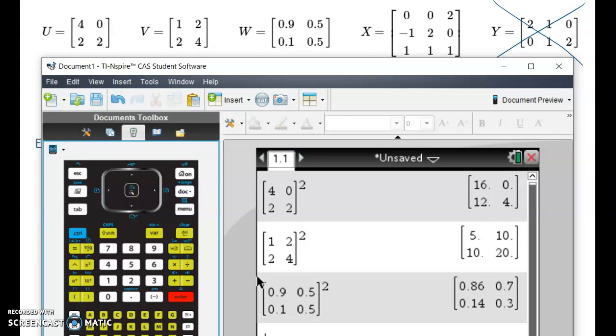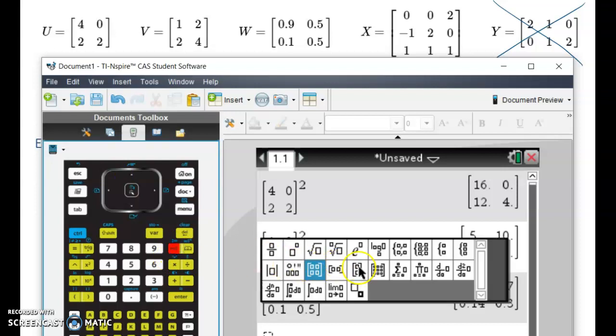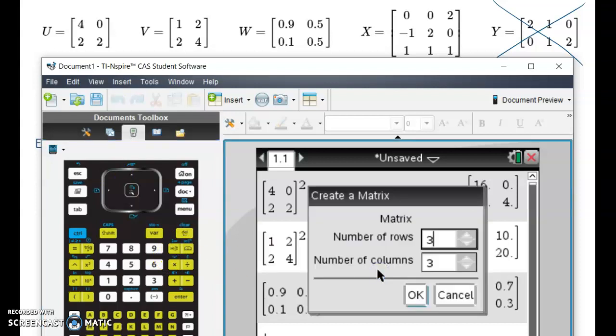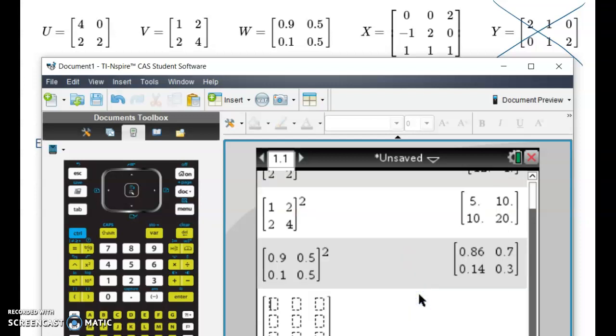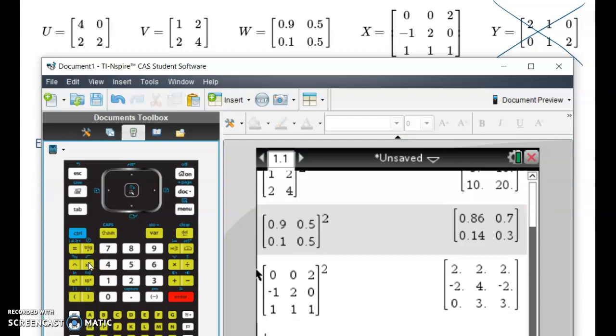And X is a little bit challenging because it's a three by three. We don't have a free prefab. If we hit that and we don't touch the number of row and columns, it's good to go. And its elements are 0, 0, 2, negative 1, 2, 0, 1, 1, 1. We square that, hit enter, and there's our resulting matrix.